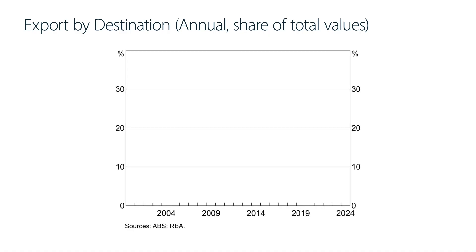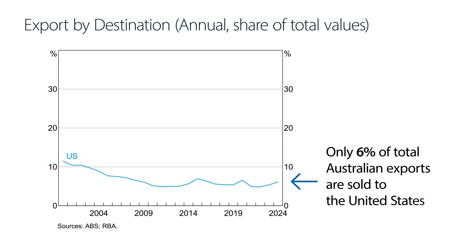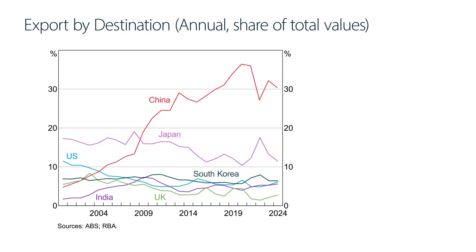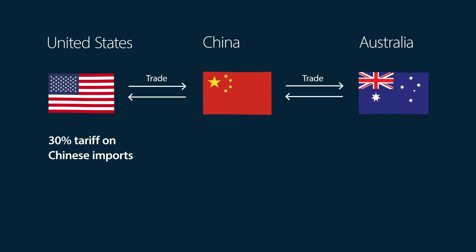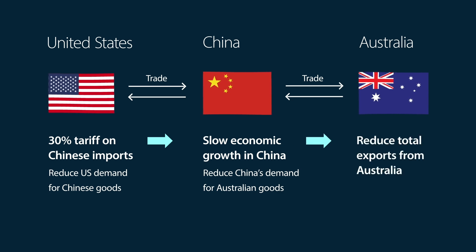So what does this mean for Australia? The direct effects of US tariffs on Australian exports is likely to be small, since exports to the US are a relatively small share of Australia's total exports. But there are also a range of indirect effects on Australia. First, it is important to think about the impact of US tariffs on Australia's other trading partners. The United States placed a 30% tariff on China, which is our largest trading partner. These tariffs will reduce US demand for Chinese exports and could therefore slow economic growth in China. If economic growth in China slows, this could reduce China's demand for Australian goods, and in turn reduce our total exports.